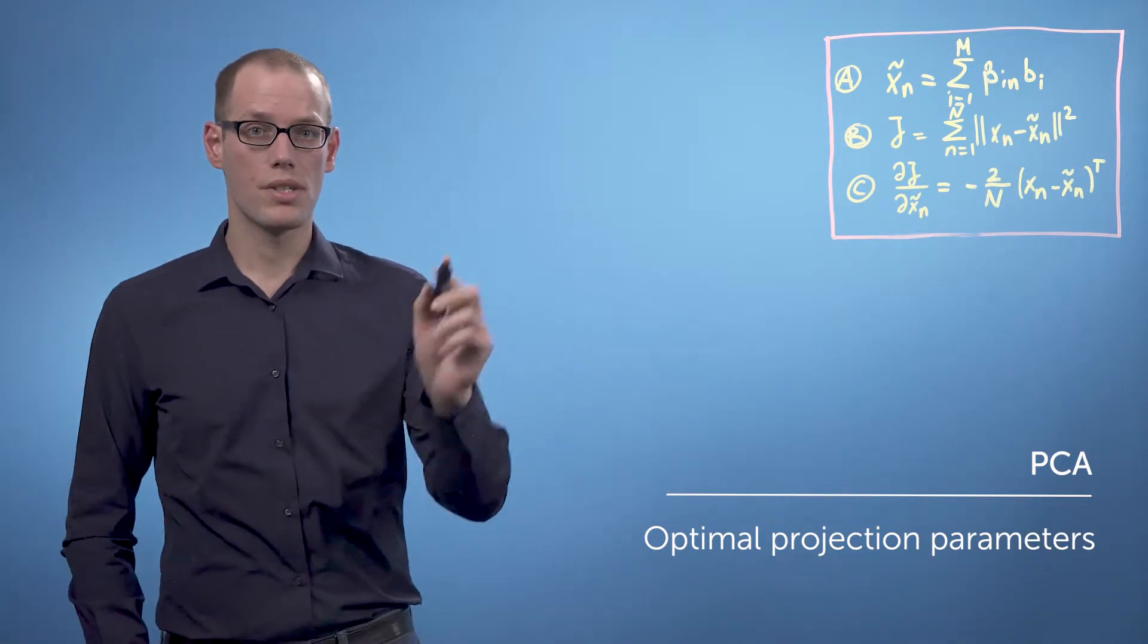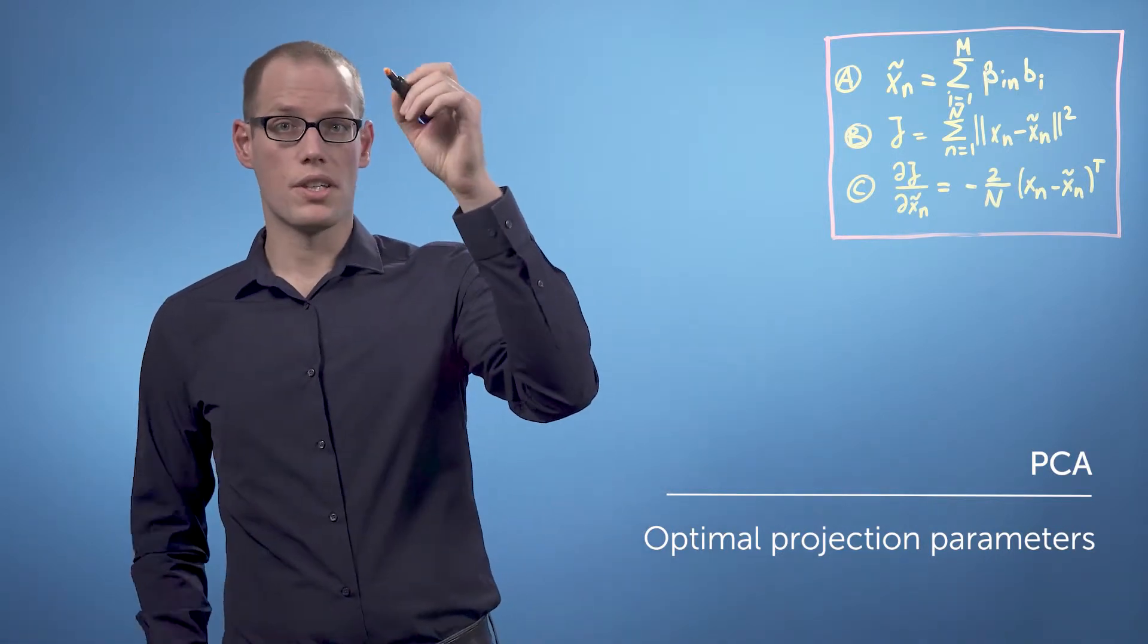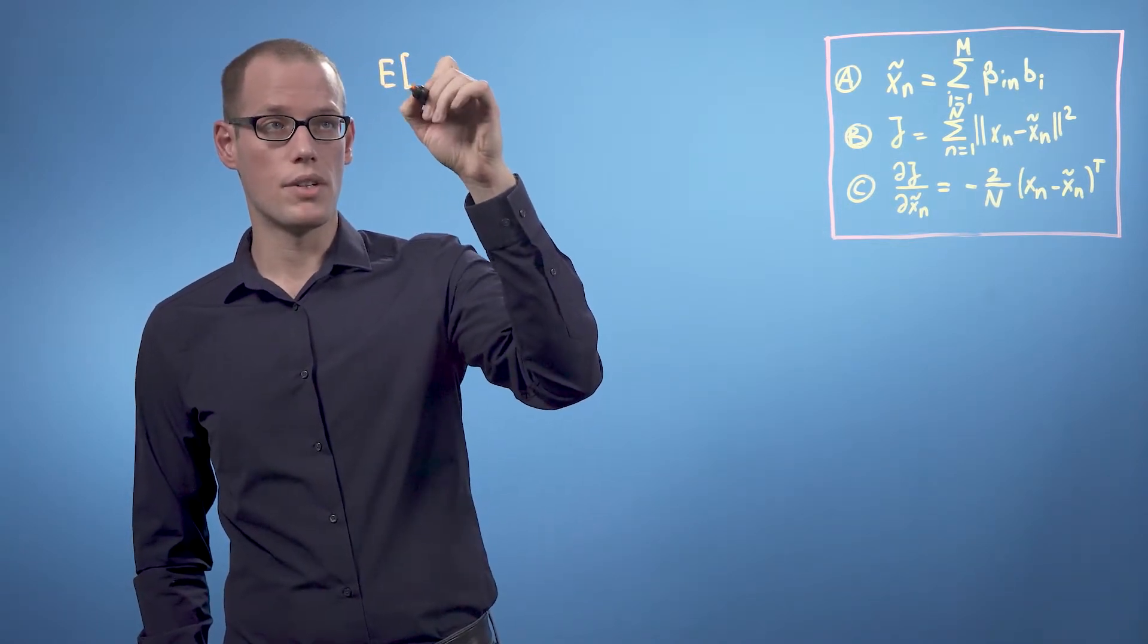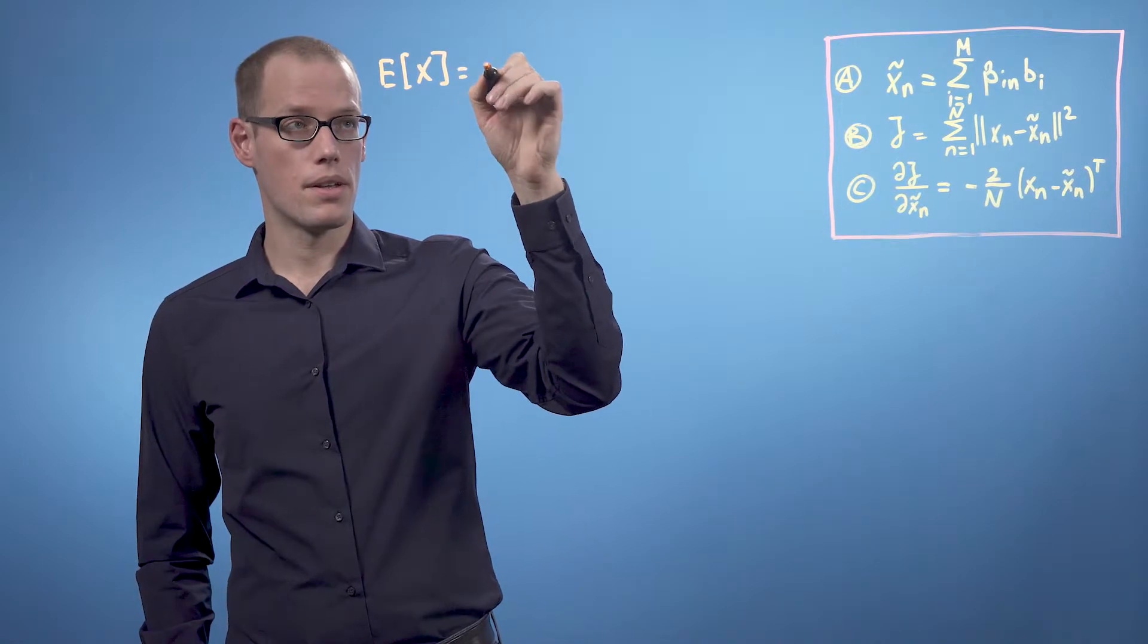We make two general assumptions in the beginning. The first thing is that we have centered data, that means that the expected value of our data set is zero.